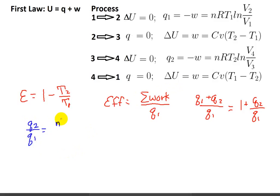We know that we're going to have nRT2 times the log of V4 over V3, and that that is going to be over Q1, which is nRT1 times the log of V2 over V1.